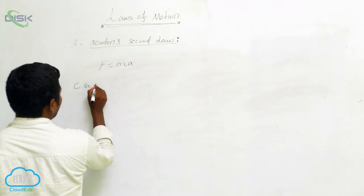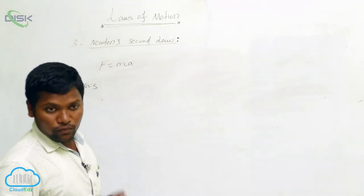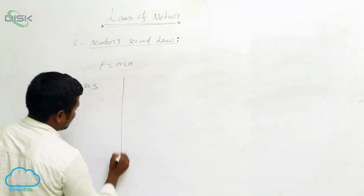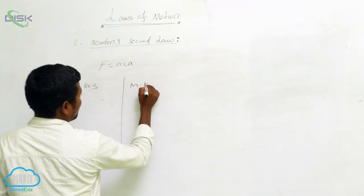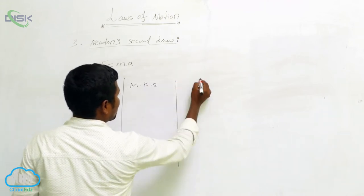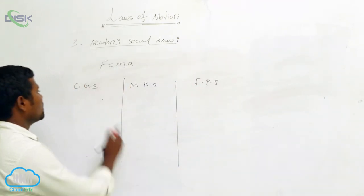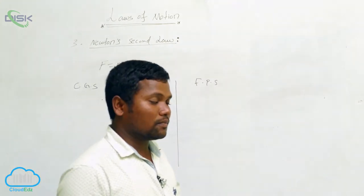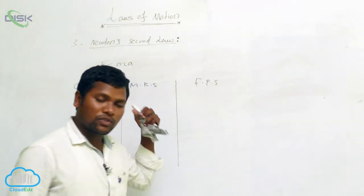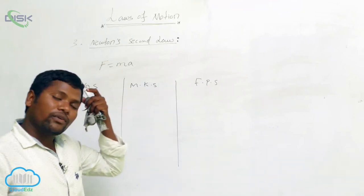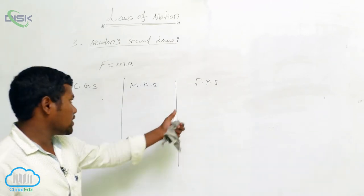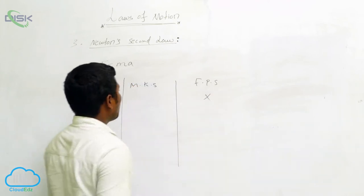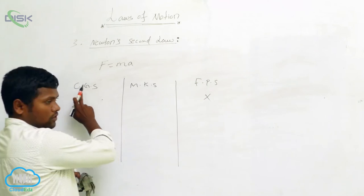The first one is CGS measurement. For force, we measure using CGS. The second one is MKS, and the third one is FPS — Foot Pound Second. C stands for centimeter, G stands for grams, S stands for seconds. M stands for meter, K stands for kilograms, S stands for seconds. Nowadays we are not using FPS — only CGS and MKS.